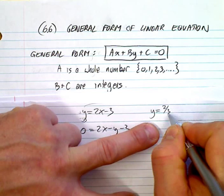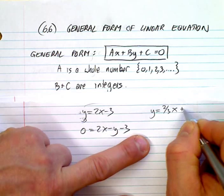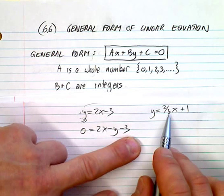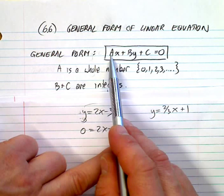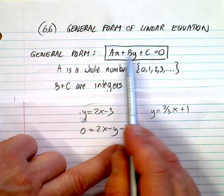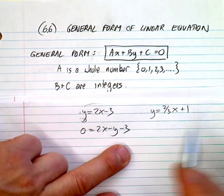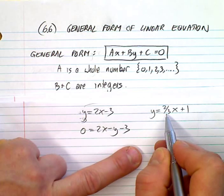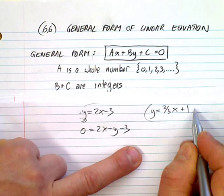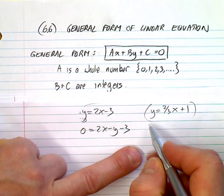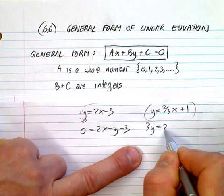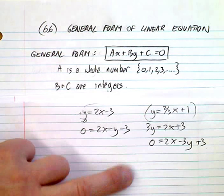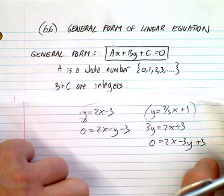A trickier situation: say you have y equals two-thirds x plus 1. We can't have fractions, so multiply everything by 3. You get 3y equals 2x plus 3. Then rearrange into general form: 2x minus 3y plus 3 equals zero. Just a couple of examples — we'll do a lot more of this.